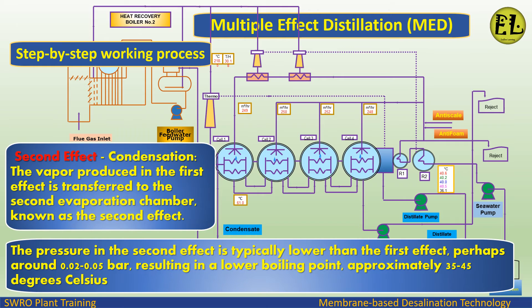Second Effect — Condensation: The vapor produced in the first effect is transferred to the second evaporation chamber, known as the second effect. The pressure in the second effect is typically lower than the first effect, perhaps around 0.02 to 0.05 bar, resulting in a lower boiling point of approximately 35 to 45 degrees Celsius.